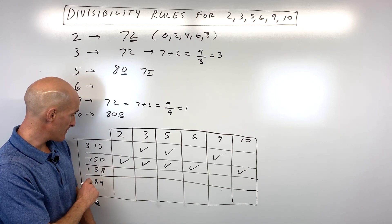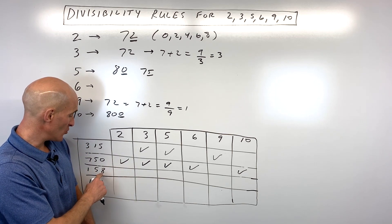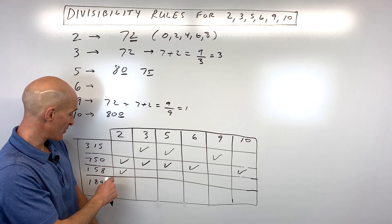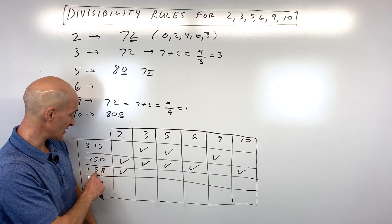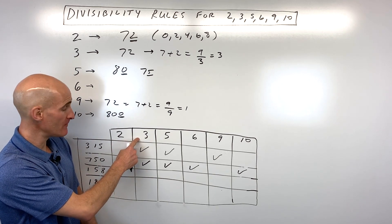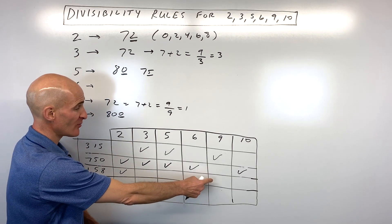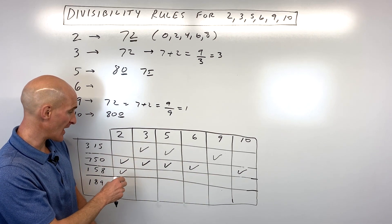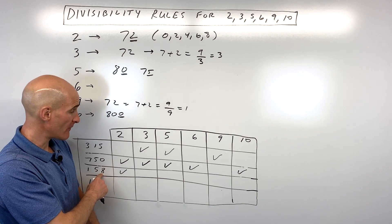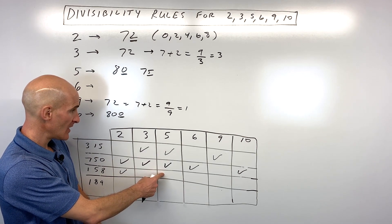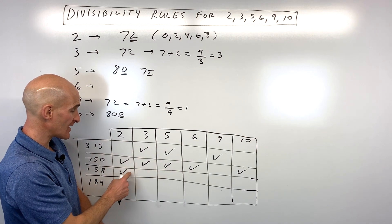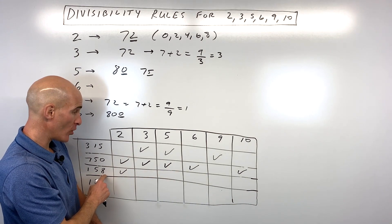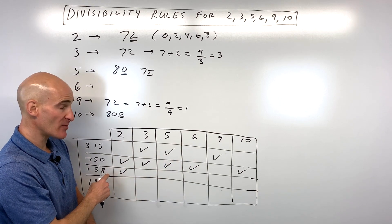How about 158? Is it divisible by 2? It ends in an even number, so yes, it's divisible by 2. Is it divisible by 3? 1 plus 5 is 6, plus 8 is 14. Is 14 divisible by 3? No. Is 14 divisible by 9? No. So the number is not divisible by 3 or 9. Does it end in a 0 or a 5? No, so it's not divisible by 5. It's not divisible by 2 and 3, so it's not divisible by 6. Does it end in a 0? No, so it's not divisible by 10. So 158 is just divisible by 2.